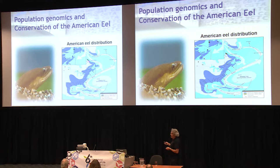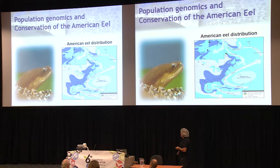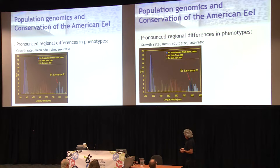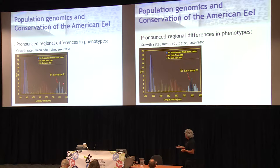This is probably the fish species that spans the most diversity of habitat of all fishes. On top of that, there are pronounced regional differences in phenotypes in terms of growth rate, mean adult size, and sex ratio. For example, the mean adult size in Rhode Island is much smaller than the adult size of eels from the upper St. Lawrence River and Lake Ontario. And the sex ratio is very different as well — we only have 100% females in eels coming up to Lake Ontario and the upper St. Lawrence.